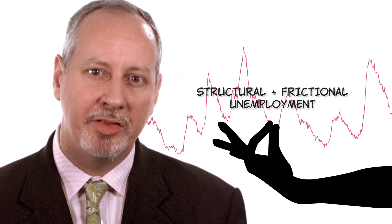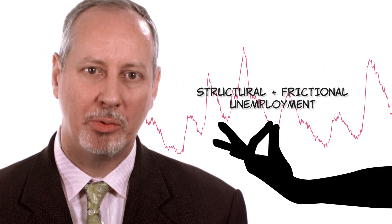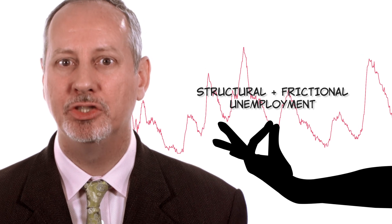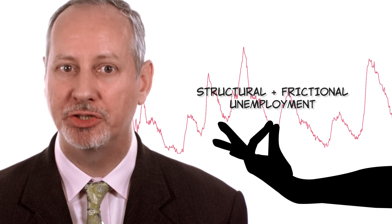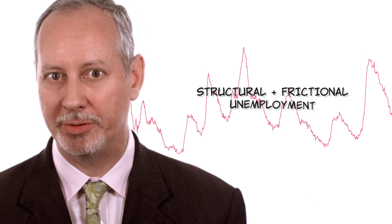Fiscal and monetary policies include things like spending more money, cutting taxes, or increasing the money supply. However, these policies are unlikely to change frictional or structural unemployment. So when the unemployment rate is close to the natural rate, that suggests that the scope for monetary and fiscal policy is diminished.